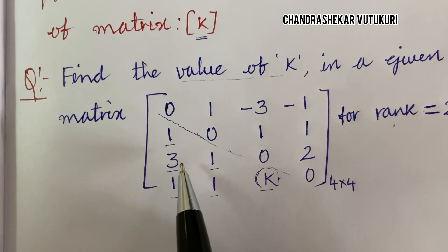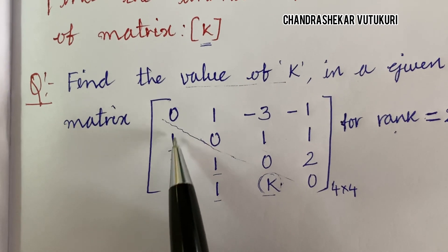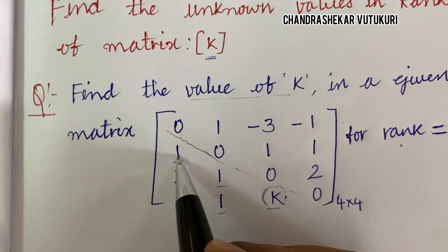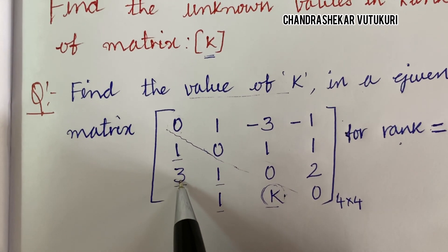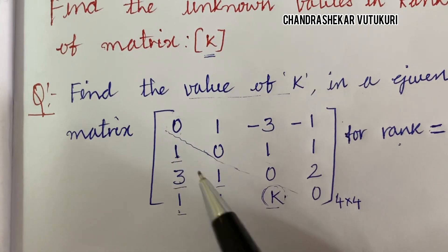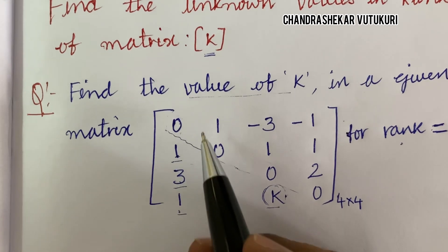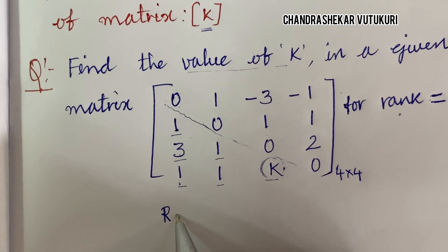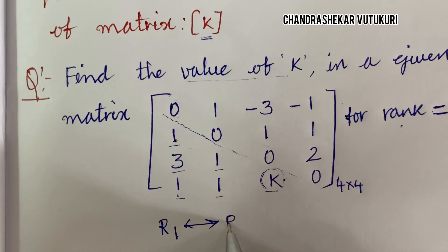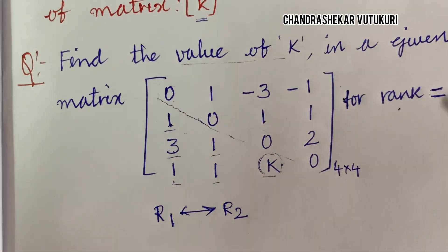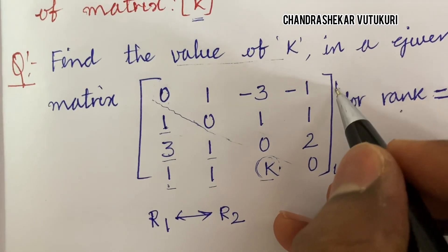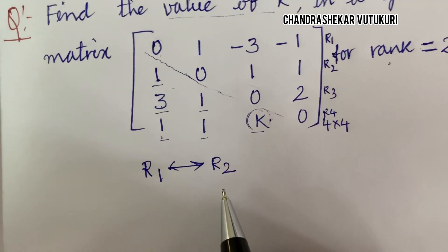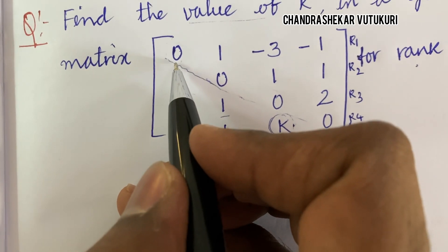The first step is a row interchange, because the first element in row 1 is 0. We want to make the elements below the diagonal zero, but we need a non-zero pivot first. So I am going to interchange row 1 with row 2. Once the question is given, write down the matrix as it is in your booklet. Label the rows R1, R2, R3, and R4.